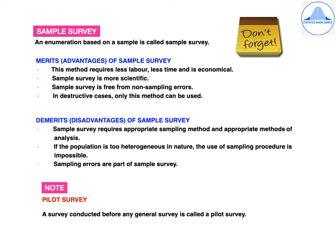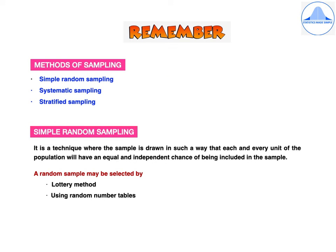A survey conducted before any general survey is called a pilot survey. There are three types of sampling methods: simple random sampling, systematic sampling, and stratified sampling. In simple random sampling, the sample is drawn such that each and every unit of the population has an equal and independent chance of being included. For example, if there are 100 students in a class, each student has a probability of 1/100 of being selected. A random sample may be selected using either the lottery method or random number tables.